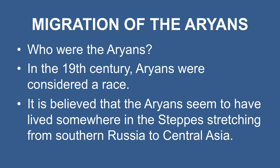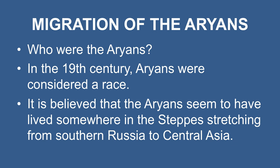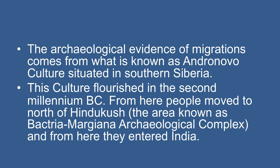Now we will discuss the migration of the Aryans. The authors of the Vedic hymns were the Aryans. In the 19th century, Aryans were considered a race. Now they are thought of as a linguistic group of people who spoke Indo-European language, from which later emerged Sanskrit, Latin, and Greek. It is believed that the Aryans lived somewhere in the steppes stretching from South Asia to Central Asia. A group of them migrated to North-West India and came to be called Indo-Aryans. Archaeological evidence of migration comes from what is known as the Andronovo culture, situated in South Siberia.